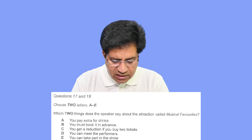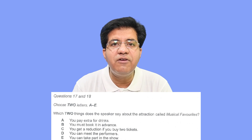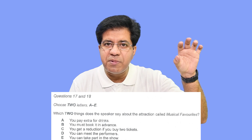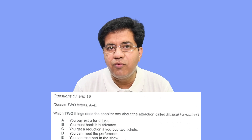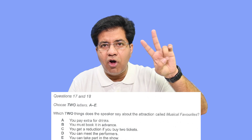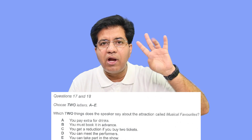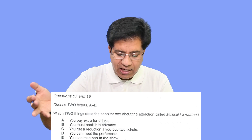A multiple choice question has two parts: one is the question statement and one is the options. Let's read the question statement: 'Questions 17 and 18 - which two things does the speaker say about the attraction called Musical Favorites?' There are two things the speaker is going to say. Out of five options, about two options he will speak positively; about the other three options he will speak the opposite.